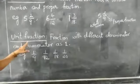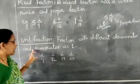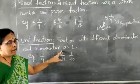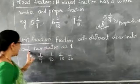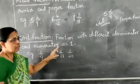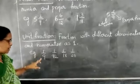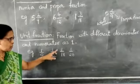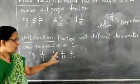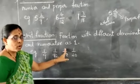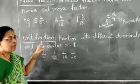Next, unit fraction. A fraction with numerator as 1 and different denominators. For example: 1/9, 1/12, 1/18. In all these, the numerator is 1. Such type of fractions are called unit fractions.